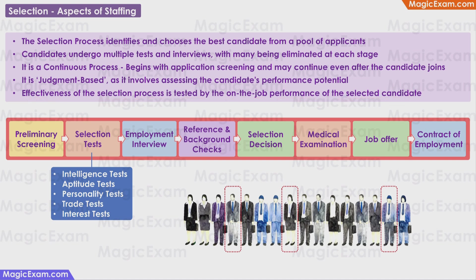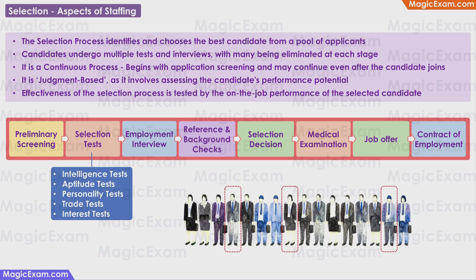The actual process of selection can be divided into eight steps. It starts with preliminary screening. Shortlisted candidates may need to take selection tests such as intelligence, aptitude, personality, trade, or interest tests. Then there may be an employment interview. In some jobs, references and background are also checked. Then the selection decision is made. For some jobs, a medical examination may also be mandatory to ensure the candidate is physically fit. Then the job offer is rolled out. When the candidate accepts, it becomes a contract of employment. So selection is a very important and lengthy aspect of the staffing process.